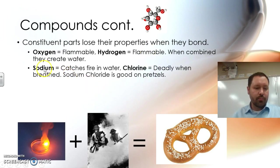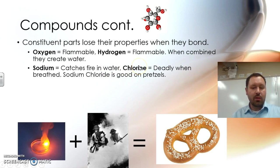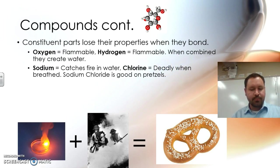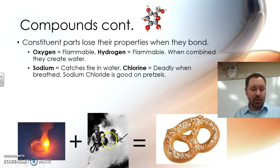Here's another example. Sodium: if you put sodium in water, it catches on fire. It's very dangerous. If you were to put pure sodium in your mouth, your mouth would catch on fire. Chlorine: you breathe just a tiny bit of chlorine and you're dead. Chlorine gas is extremely deadly. I'm talking about pure chlorine, the element — not the compound used in pools. But when you put sodium and chlorine together chemically, it's good on pretzels because it makes salt — sodium chloride. They lose their identity. That's what these pictures show: sodium burning in water, chlorine gas, but put them together chemically and you get salt.